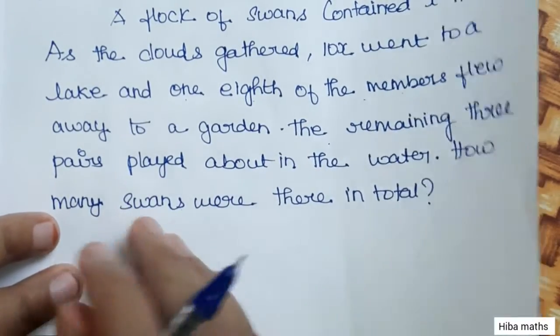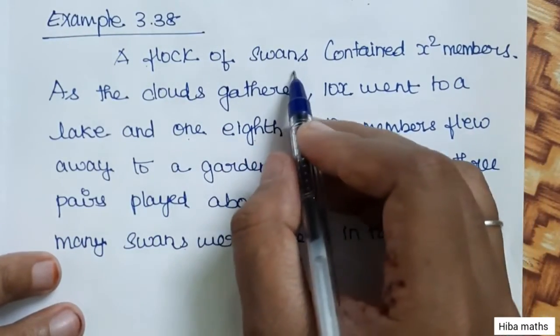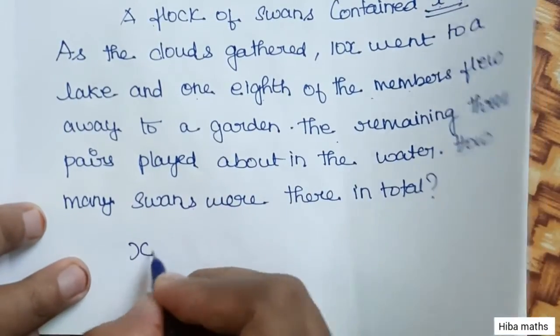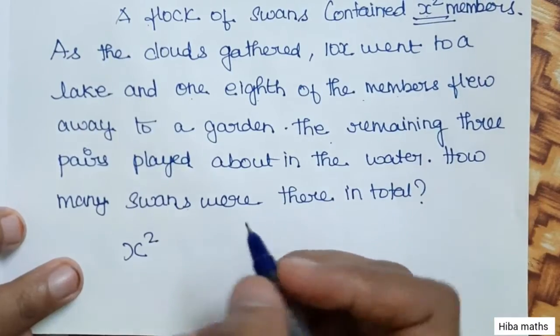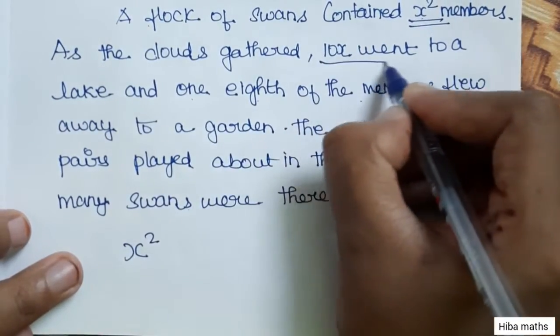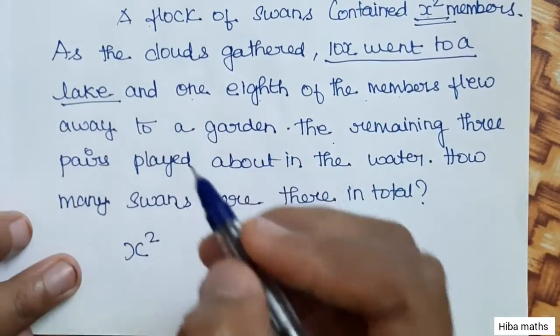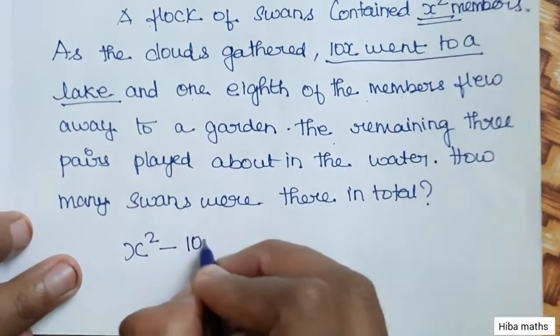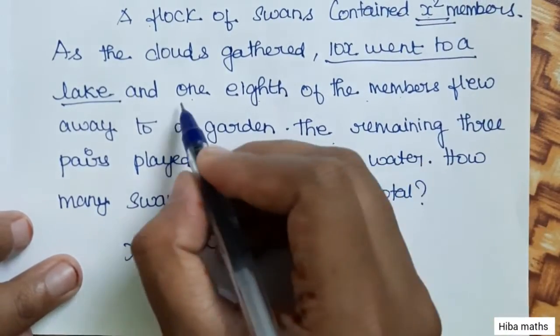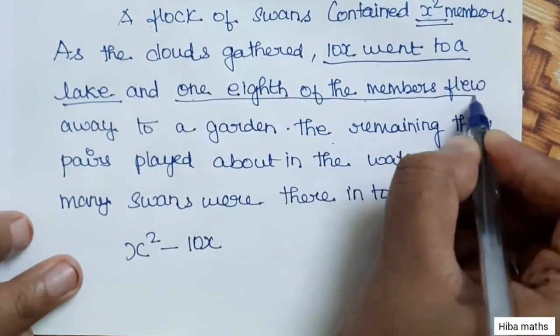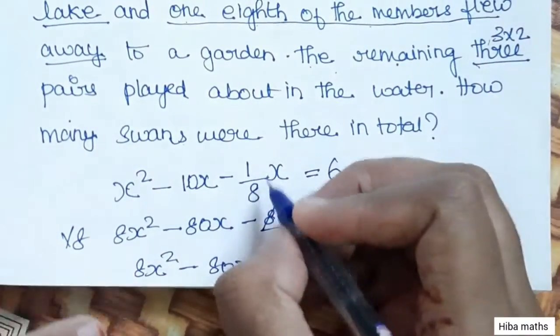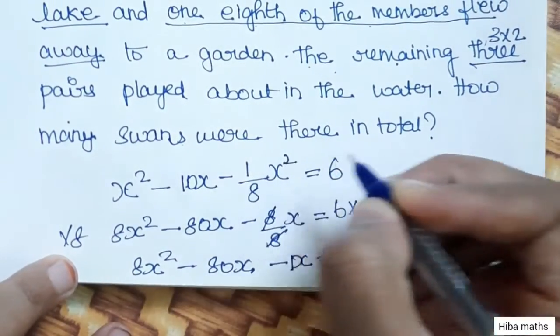Let's see how many swans were there. A flock of swans containing x² members. As the clouds gathered, 10x went to a lake. If 10x go to the lake, then 1 by 8 of total amount flew away.